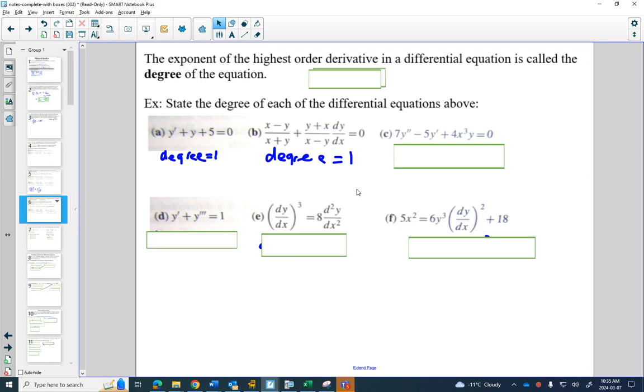Here, the degree is 1, despite it being an order of 2. Because we have the second derivative there, but we only have the second derivative once. Same thing here. The degree is 1. We have the third derivative. But the third derivative happens only once.